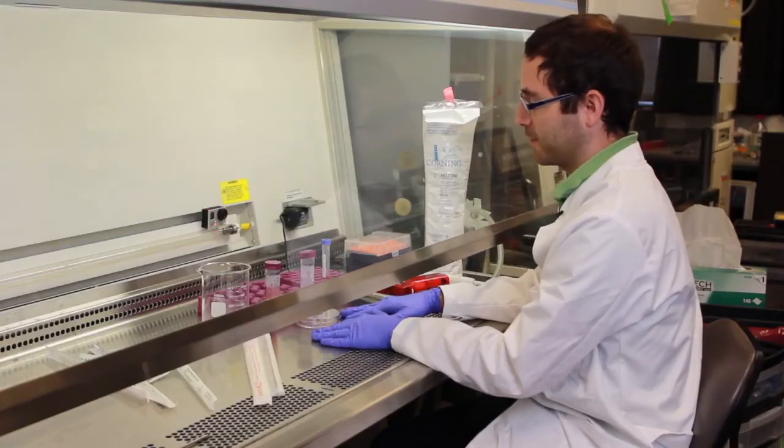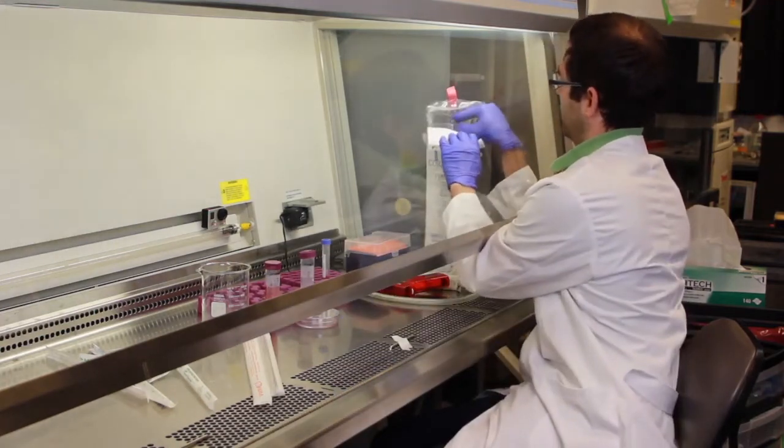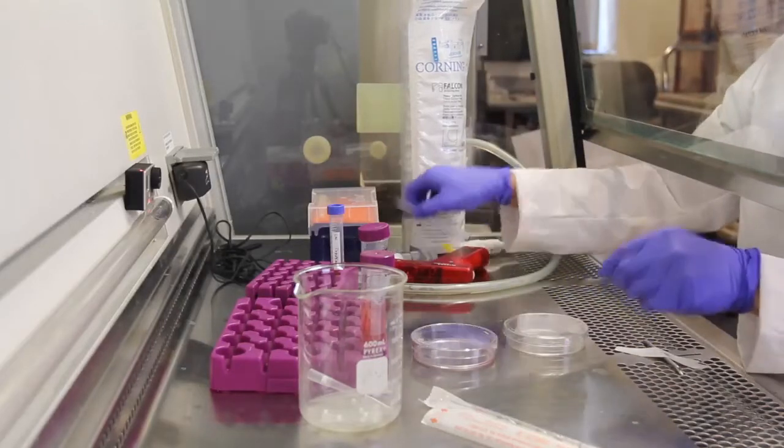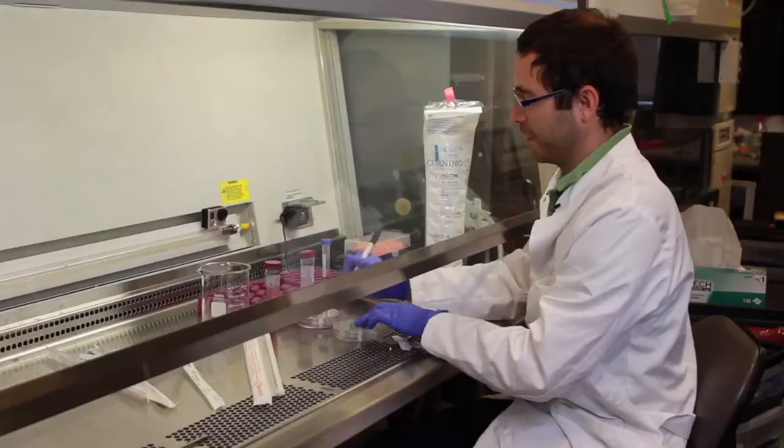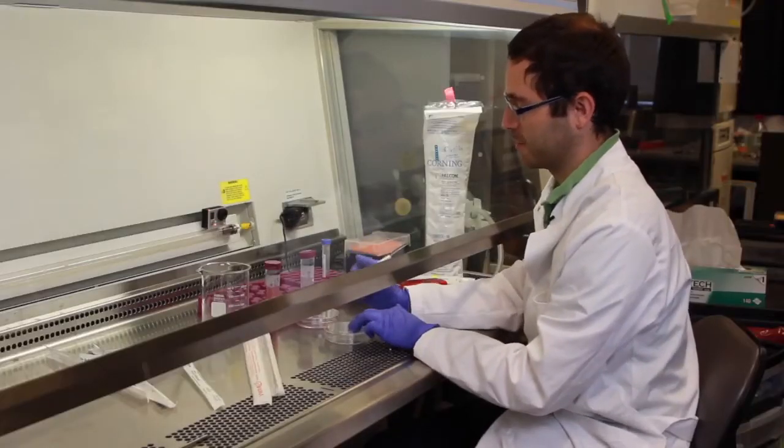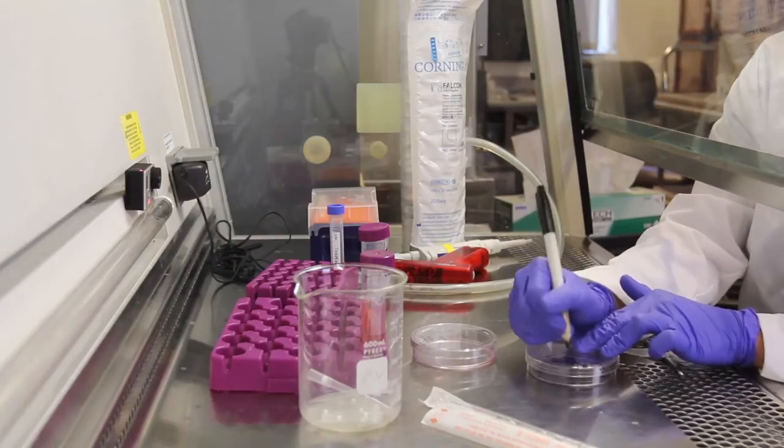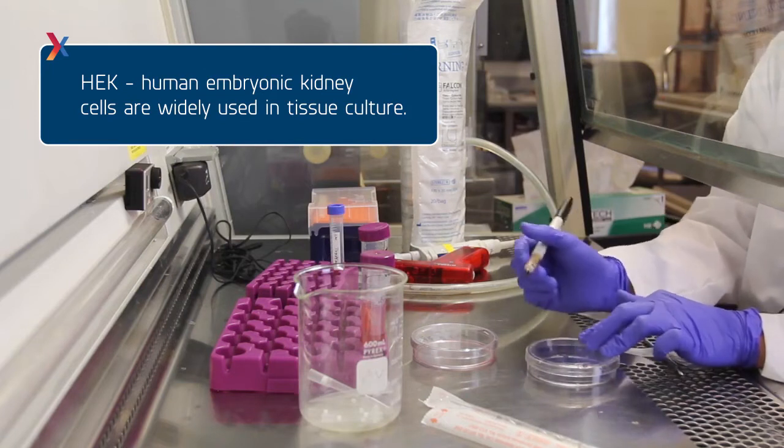After about a minute I like to prep the next plate that the cells will be split onto. So take a clean plate from this stash and each plate should be labeled with a few different things. For one there should be either your initials on it or some sort of identifier of who they belong to. You want to indicate what type of cells there are. In this case it's human embryonic kidney cells, abbreviated HEK.